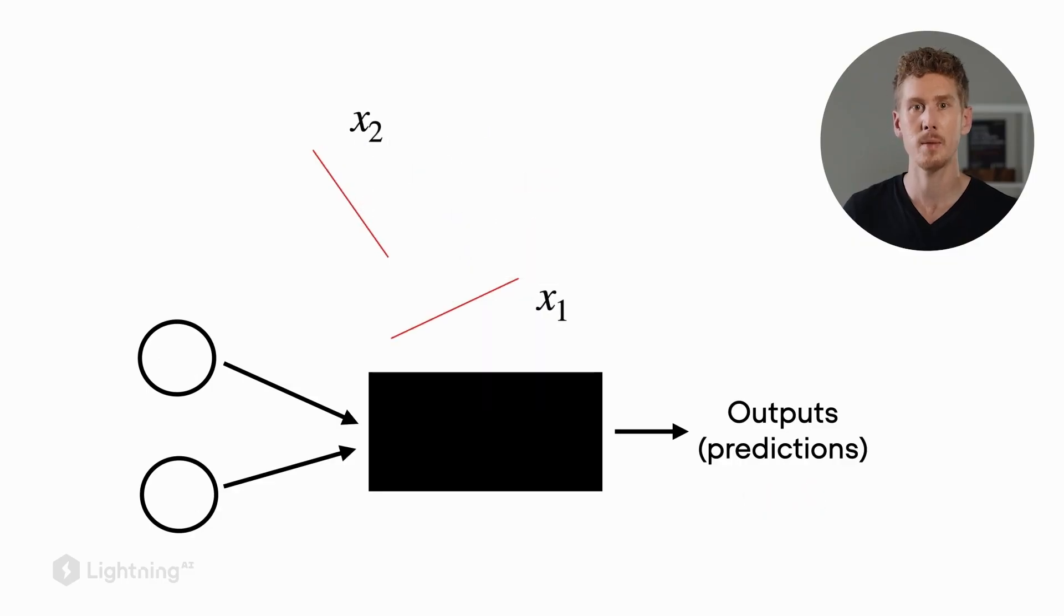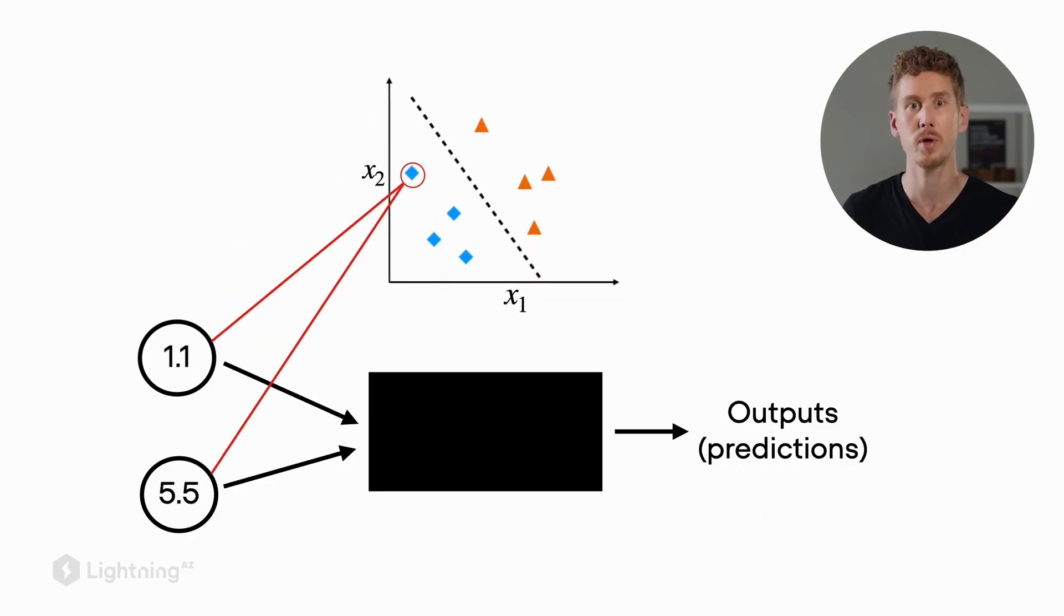So let's pick out a particular point from this dataset and see how it's processed by the perceptron. So here we're looking at the point with the x1 value of 1.1 and the x2 value of 5.5. In this particular case, since that's our training dataset, we already know the true answer. We know that this point is the blue diamond. However, in real life, when we have a prediction problem, we apply it to new data where we don't know the answer yet, and it should come up with the predictions.